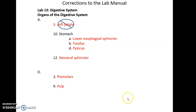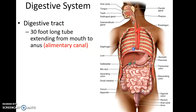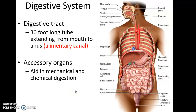The digestive system is approximately a 30-foot-long tube that goes from the mouth all the way down to the anus, and it is often called the alimentary canal. There are also additional accessory organs that aid in mechanical digestion — that's breaking food up into smaller and smaller pieces — and others that help with chemical digestion, which breaks big molecules down into small, easier-to-absorb simple molecules.